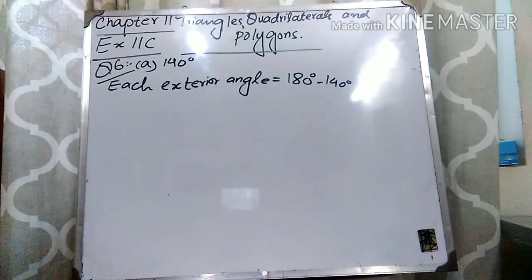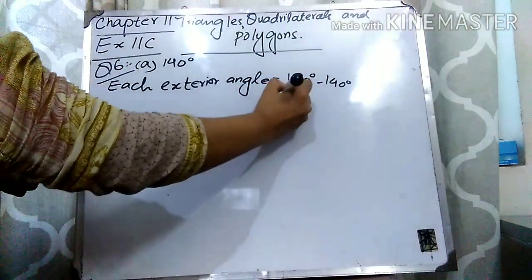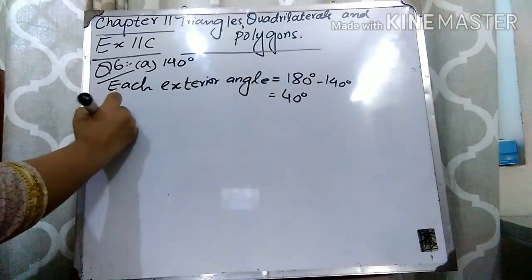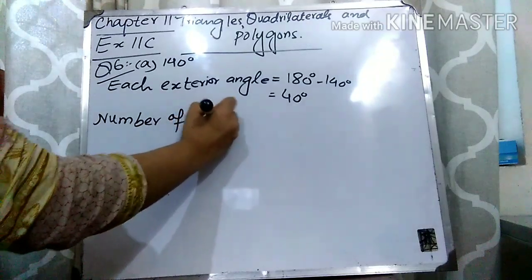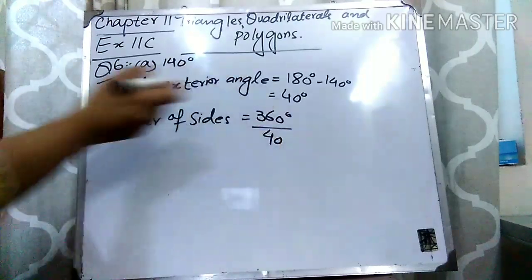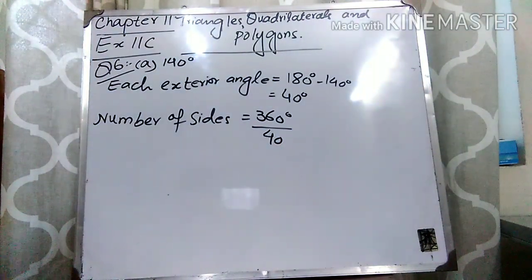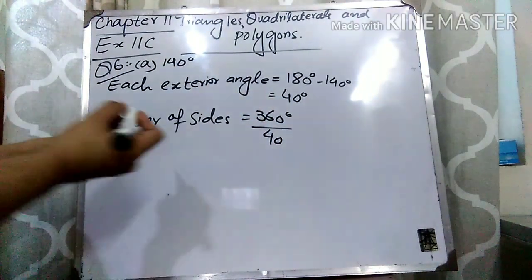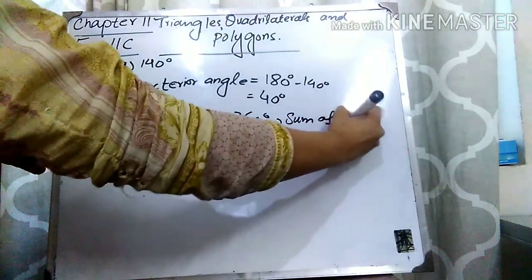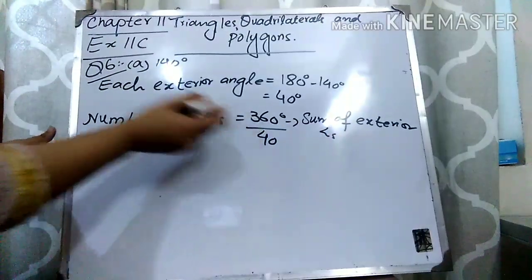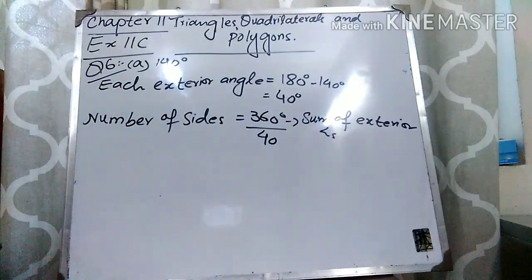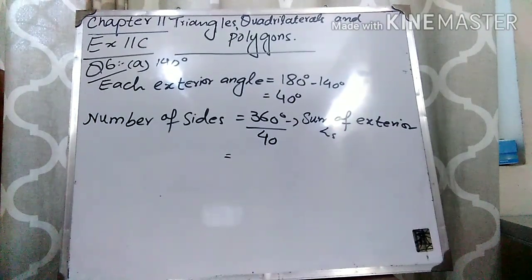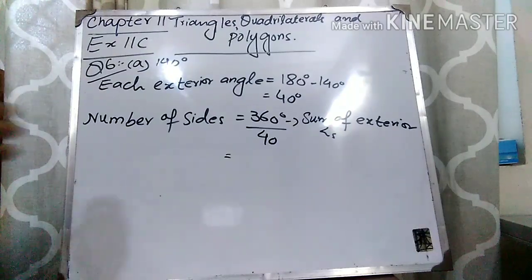When we subtract each interior angle from 180°, we get each exterior angle, which is 40°. Now we find the number of sides by dividing 360 by each exterior angle. Remember, the sum of exterior angles of any polygon is equal to 360°. So when we divide 360 by 40, we get 9. The number of sides is 9.